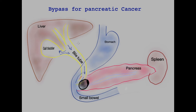Looking at this picture, there's the liver, the bile tube, the gallbladder attached to the side of the bile tube and the bile tube draining bile into the small bowel. There's the gullet, the stomach, the small bowel and at the back of the stomach is the gland called the pancreas, with the spleen at the tail end.